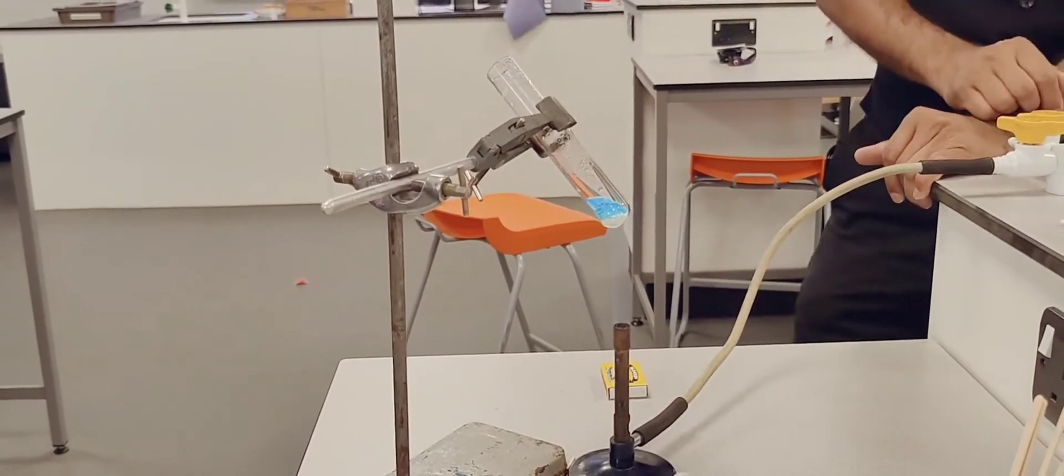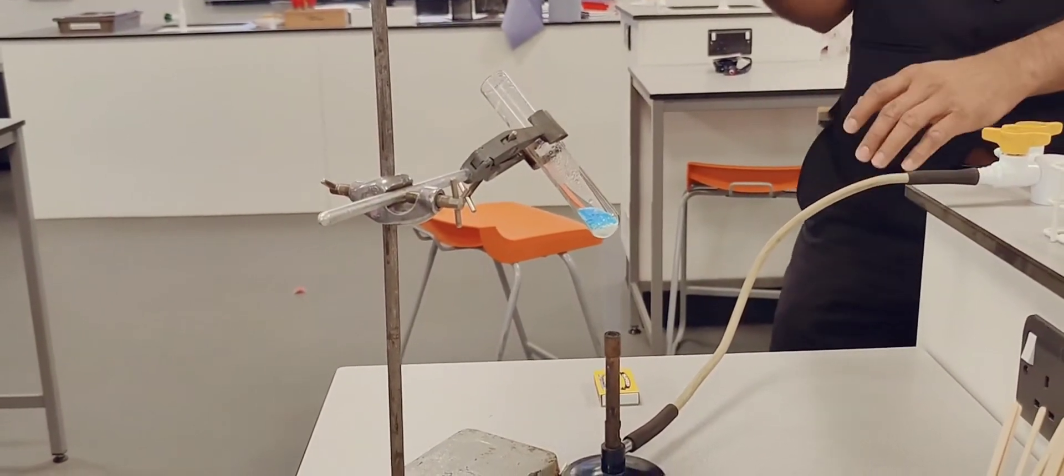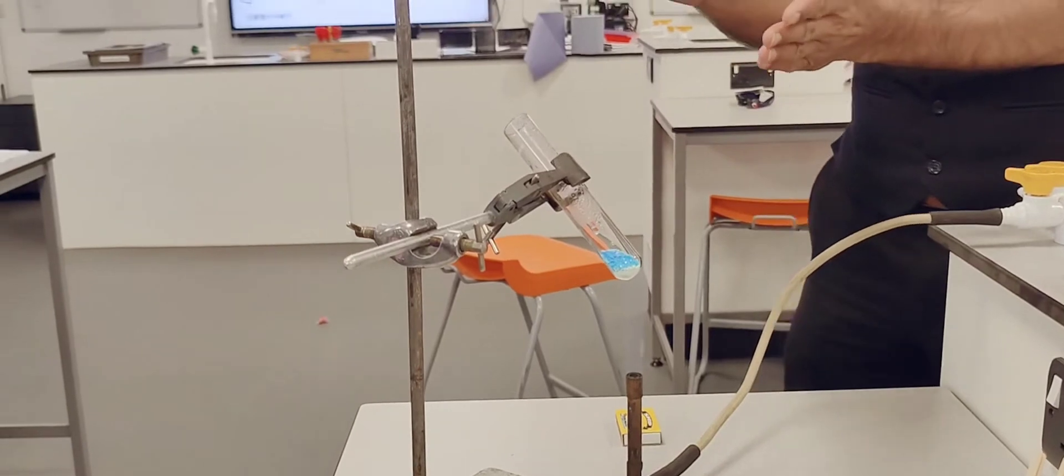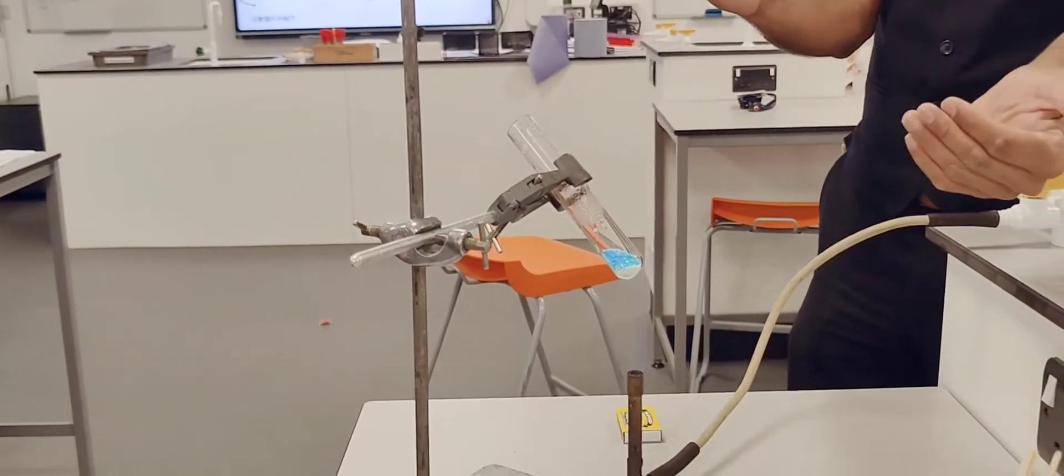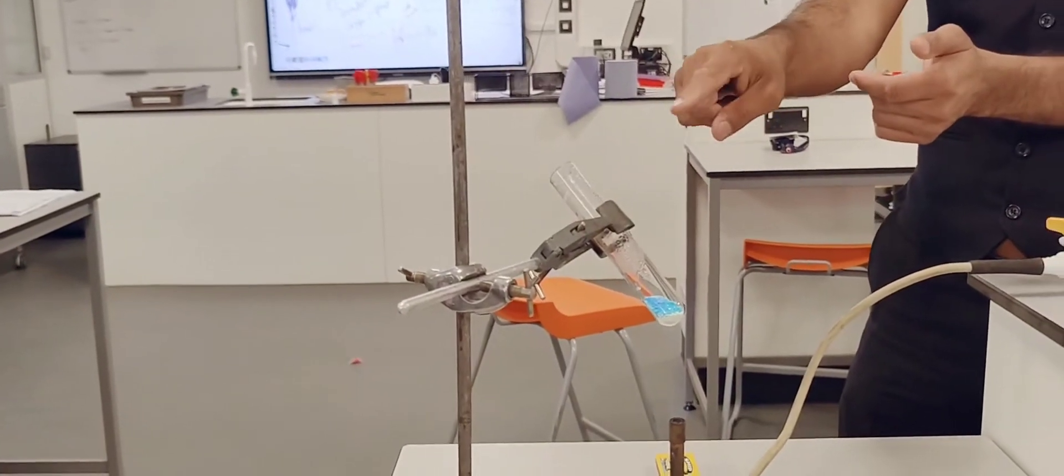If you see that, the whole boiling tube is getting moisture because the top part is cold. So the water which is evaporating out of copper sulfate is condensing on the top of the boiling tube.